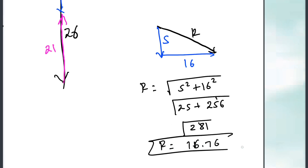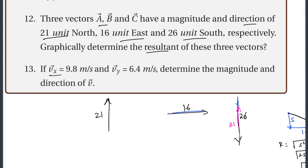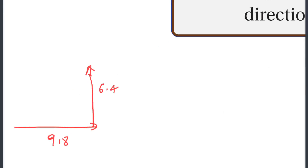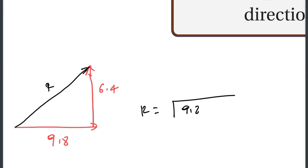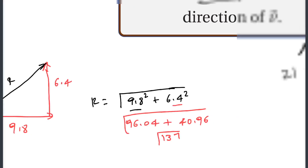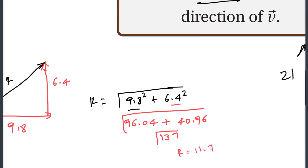Using the component method, the resultant magnitude equals the square root of the sum of squares of x and y components. The x component squared plus the y component squared — taking the radical gives a resultant magnitude of 7 meters per second.